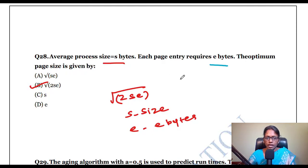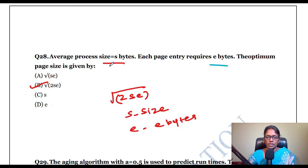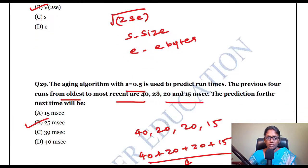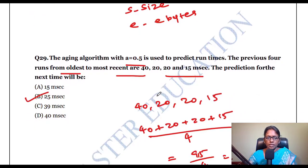The optimum page size formula: given average process size S bytes and each page entry requires E bytes, the optimum page size is the square root of 2SE. This is a formula you must remember.